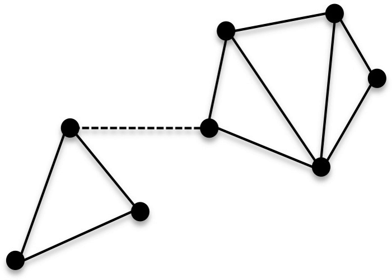In an undirected graph G, two vertices U and V are called connected if G contains a path from U to V. Otherwise, they are called disconnected. If the two vertices are additionally connected by a path of length 1, i.e. by a single edge, the vertices are called adjacent. A graph is said to be connected if every pair of vertices in the graph is connected.